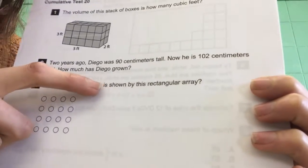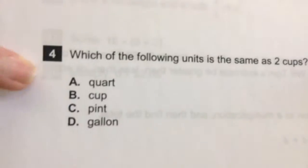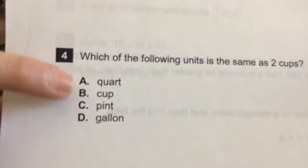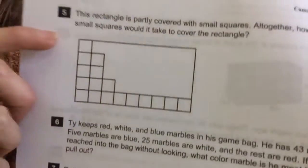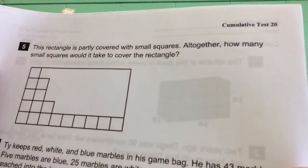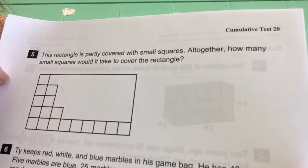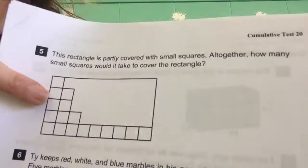Three. What multiplication fact is shown by this rectangular array? Number four. Which of the following units is the same as two cups? So which one is equal to two cups? Two cups equals? Okay, next number five. Number five. This rectangle is partly covered with small squares. Altogether, how many small squares would it take to cover the rectangle? You could even draw the squares in even if you wanted to.